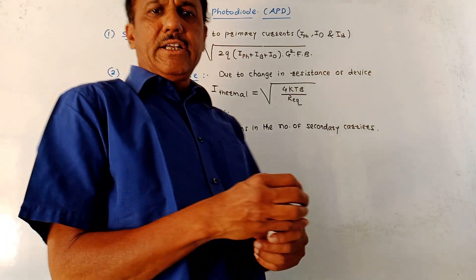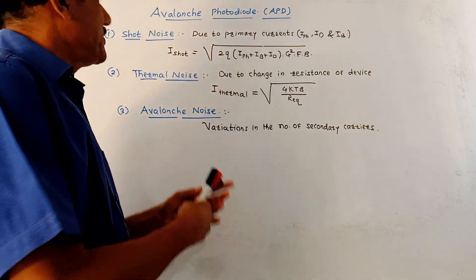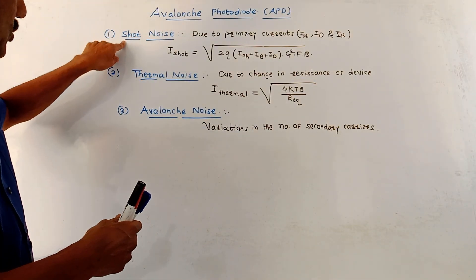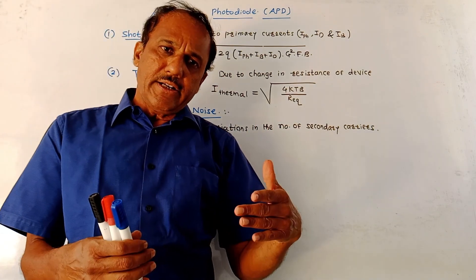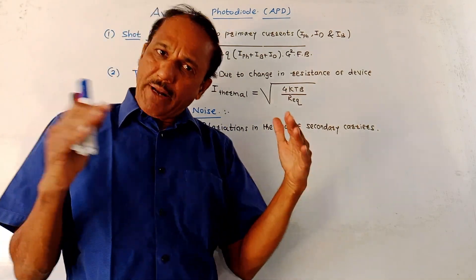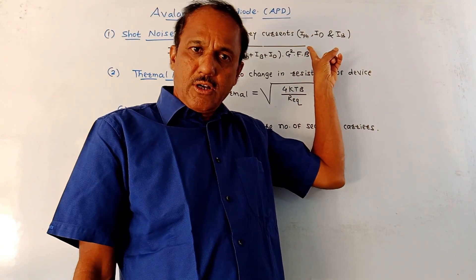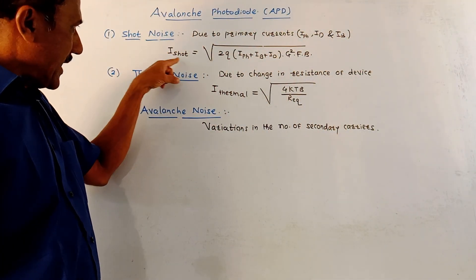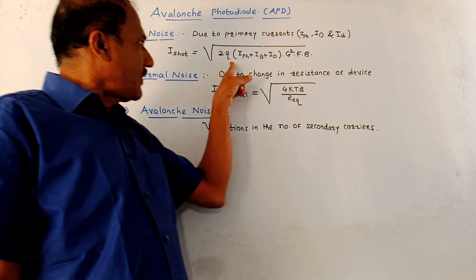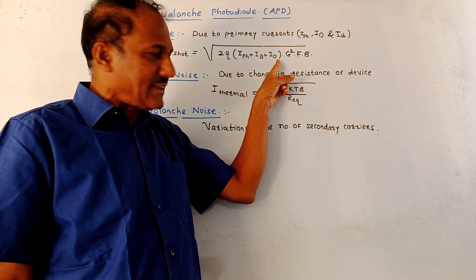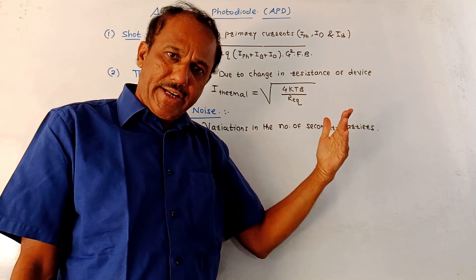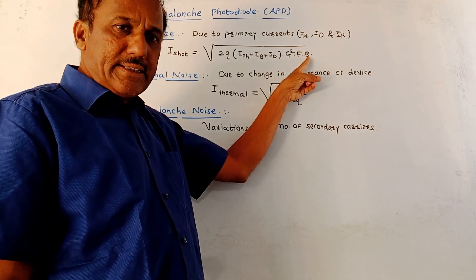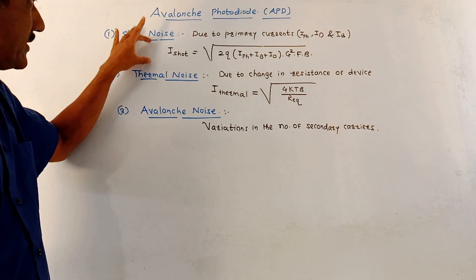Next we will discuss the different noise phenomena in case of avalanche photodiode. Like the PIN diode, there are different noise factors. First is the shot noise. This noise is generated due to the primary currents — the primary currents are IPH, that is photo current, or dark current ID, or background current IB. The mathematical equation is: I_shot = sqrt(2Q × (IPH + IB + ID) × G² × F × B), where Q is the charge of the electron, G is the gain provided by the APD, F is the excess noise factor, and B is the bandwidth.